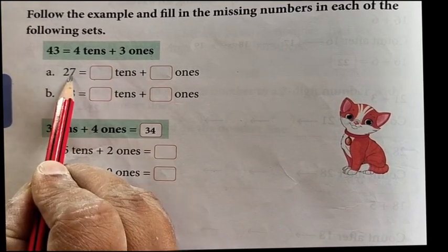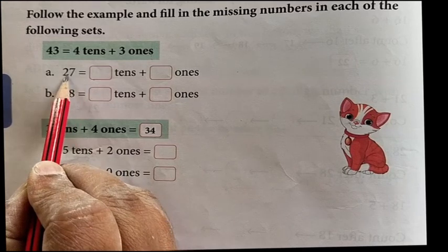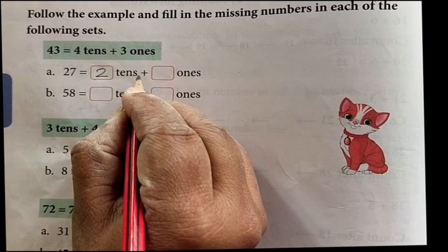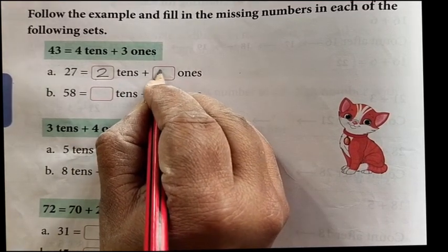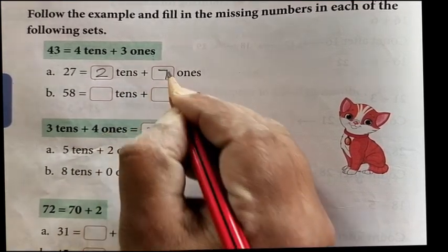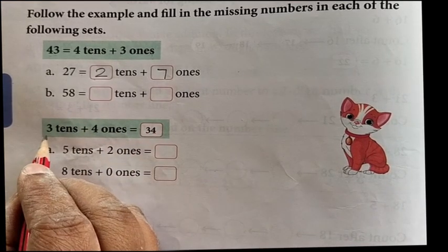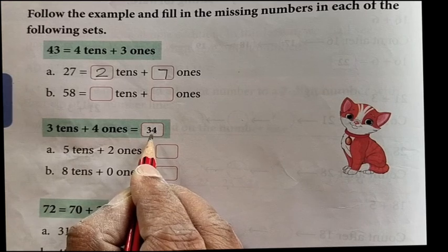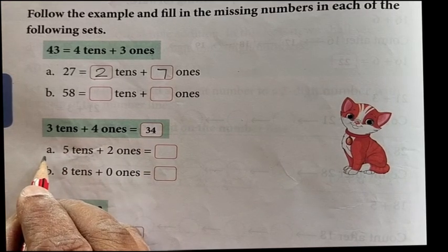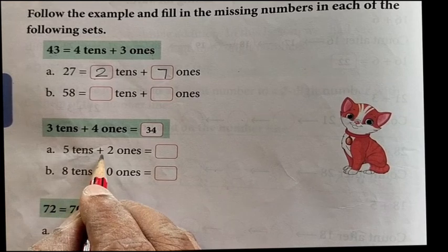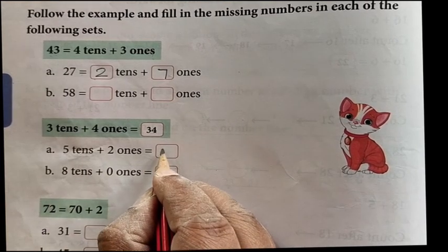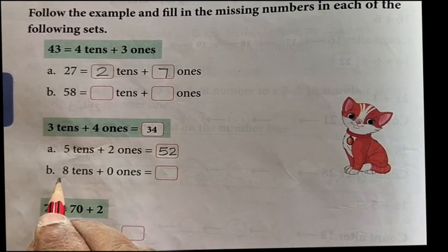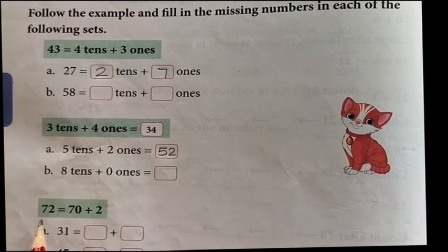A: 27 is equal to 2 tens plus 7 ones. Likewise, you have to do this one. Next one: 3 tens plus 4 ones is equal to 34. Next one: 5 tens plus 2 ones is equal to 52. Likewise, you have to do this one.